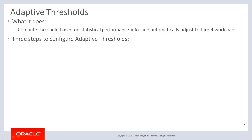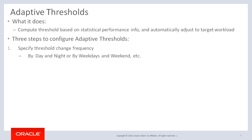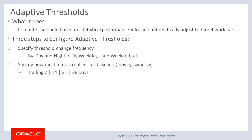Let's take a closer look at the adaptive threshold option. To recap, it computes threshold values based on statistical performance information and auto-adjusts to the target workload. There are three steps to configure. First, you specify the threshold change frequency — you can select different thresholds based on time, such as day and night or weekdays and weekends. Then you can specify how much data to collect for the baseline, ranging from 7 days to 28 days. Once the time-based settings are set, you can select metrics, register them, and configure threshold settings.